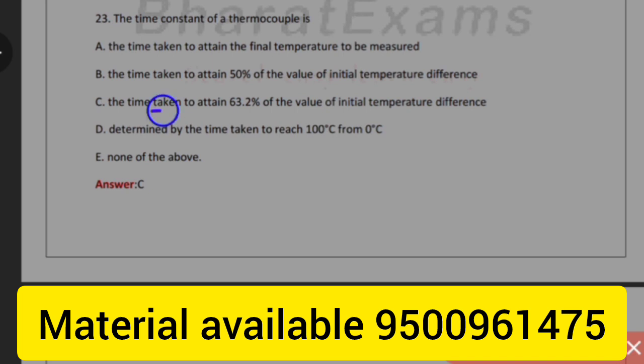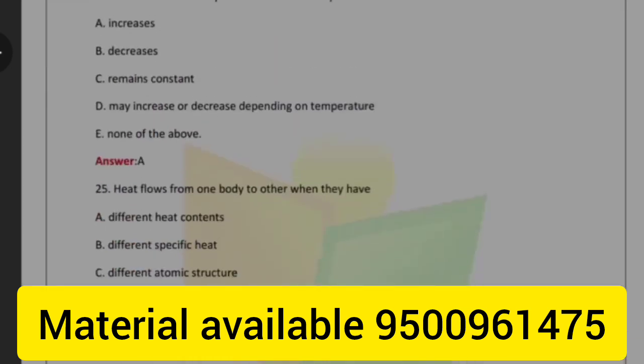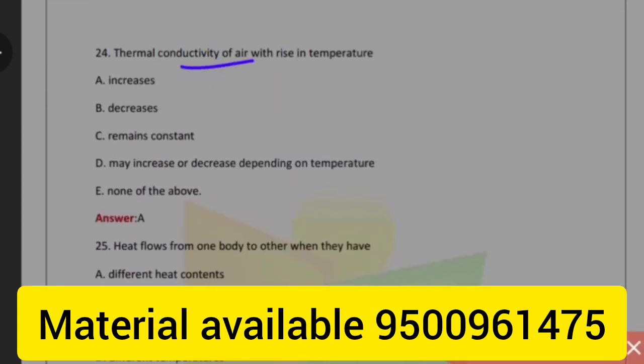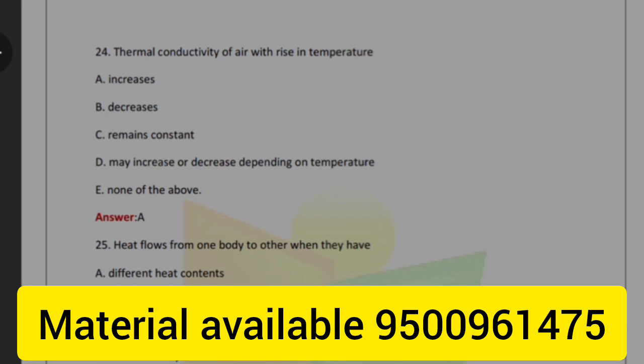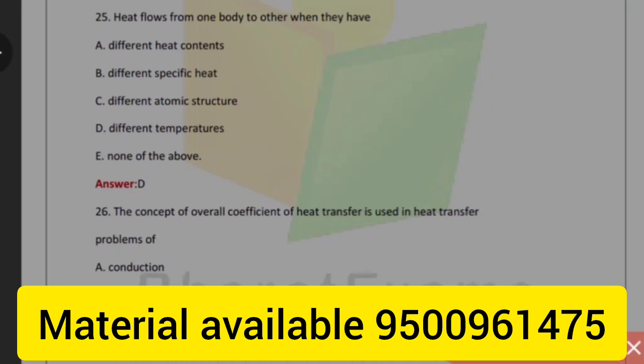The time constant of the thermocouple is the time taken to attain 63.2 percent of the value of initial temperature difference. Thermal conductivity of air with rising temperature increases. Heat flows from one body to another when they have different temperatures.